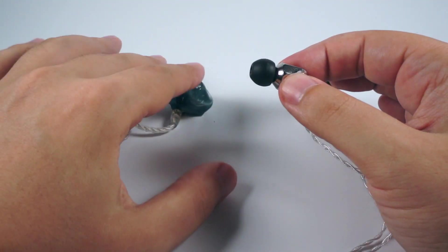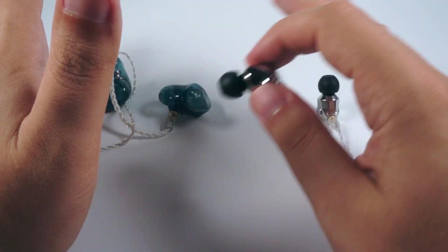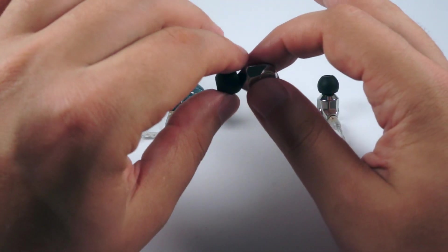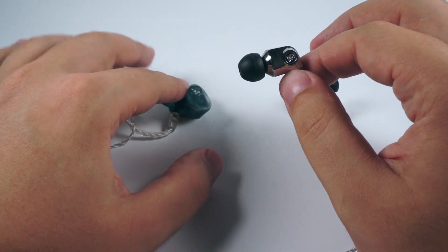Mids here are a bit recessed compared with Andromedas because Andromedas have, I think, probably almost linear frequency response. Maybe not, but closer to linear. Here mids are recessed more than in Andromedas.